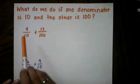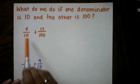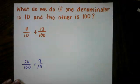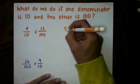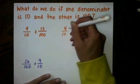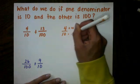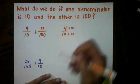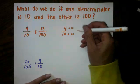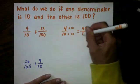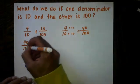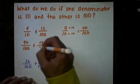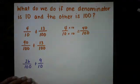It would be really easy for me to turn 4 tenths into a fraction that has a hundredths as the denominator. And I hope you're thinking what I'm thinking right now. I'm going to take that 4 tenths and I'm going to multiply the numerator and the denominator both by 10. If I multiply both of them by the same number, I get an equivalent fraction. And I end up with 40 one hundredths. Now if I add 40 one hundredths plus 13 one hundredths, I have common denominators.